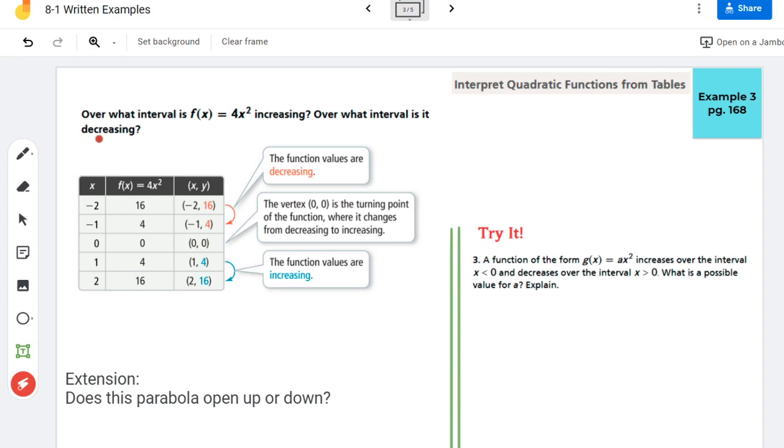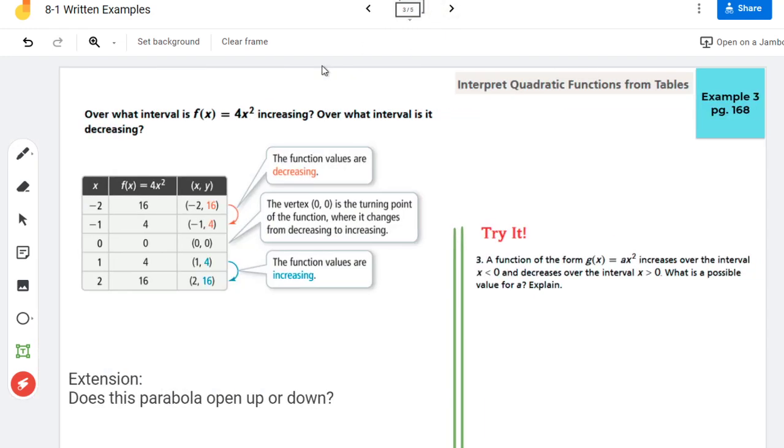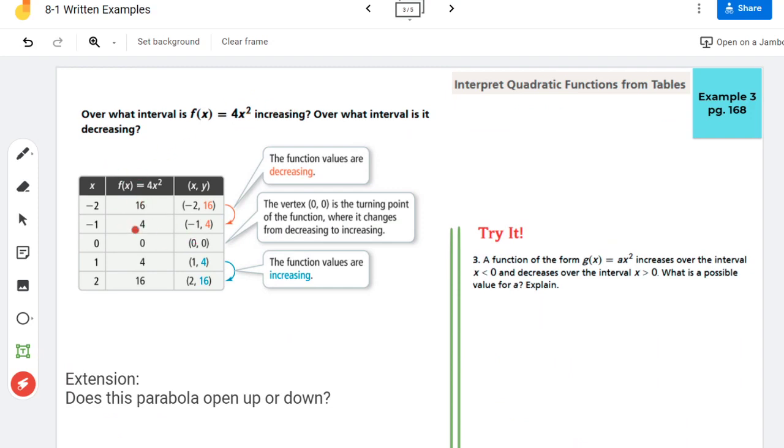In this example it says over what interval is the function f(x) = 4x² increasing and over what interval is it decreasing? So remember when we're talking about increasing versus decreasing from example one, we're talking about a dude on a GoPro and whether the graph was going downhill or uphill. We're looking for signs of that within a table.